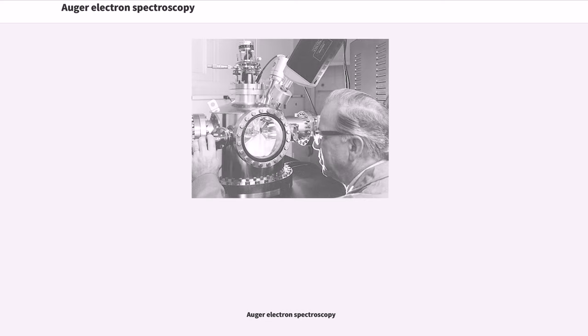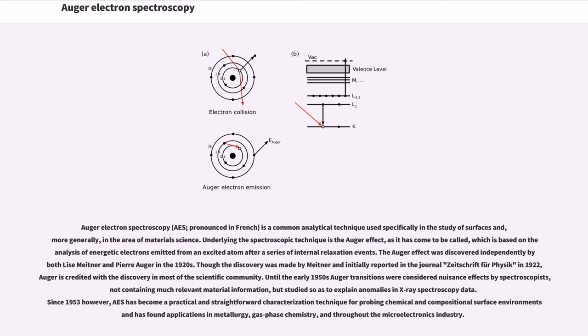Auger Electron Spectroscopy is a common analytical technique used specifically in the study of surfaces and, more generally, in the area of materials science.